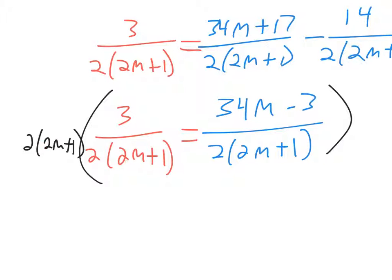And if we multiply this to this term, it completely cancels out. If you multiply this to this term, it completely cancels out. So we'll be left with 3 equals 34m minus 3. You get that little equation to solve.